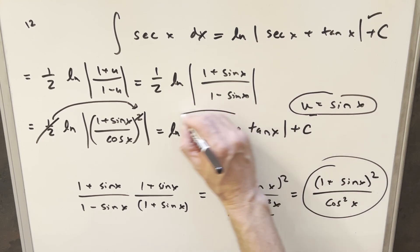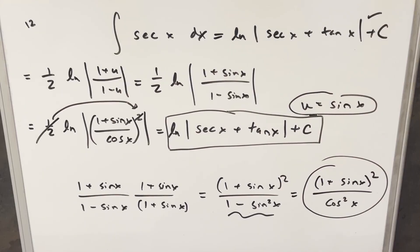Then I'll just add a plus c and that's it. So there you have it: integral of secant x two different ways. We'll stop it there. Thanks everyone for watching. Have a great day.